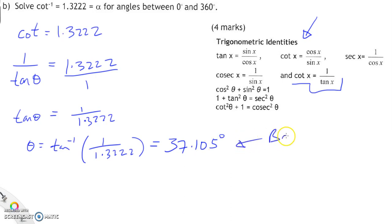And the tan inverse of that, we have it written down here somewhere, like 37.105 degrees. And this here is what's called our base angle. So that's a base angle. If you get tan that, that angle will give you a cotan of 1.3222.